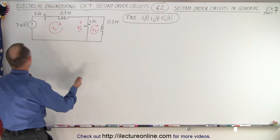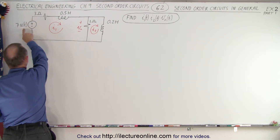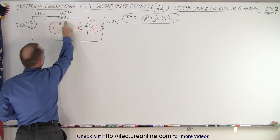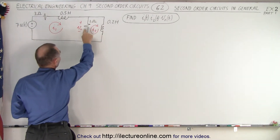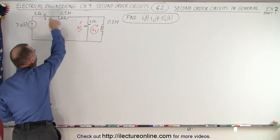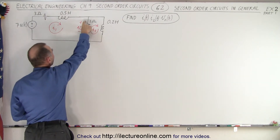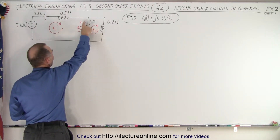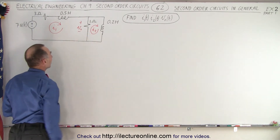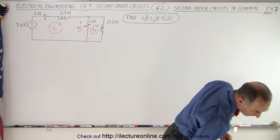Here we have the circuit. We have a voltage supply that provides 7 volts, but it starts at time equals zero. We have a resistor and an inductor in series, and now we have a resistor and an inductor in parallel. Notice that we have loop 1, mesh 1 with current I1, and mesh 2 with current I2, and the voltage across the 1 ohm resistor, with plus and minus indicated.